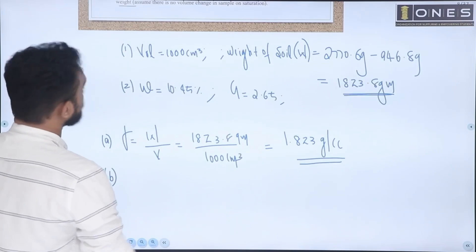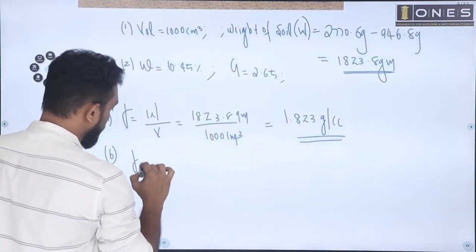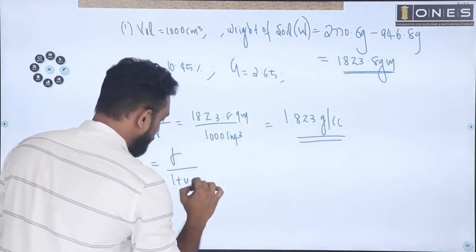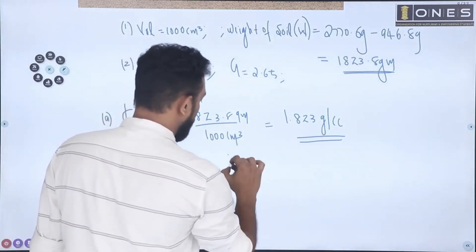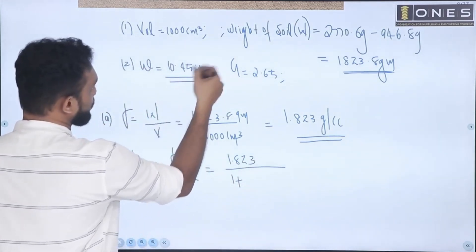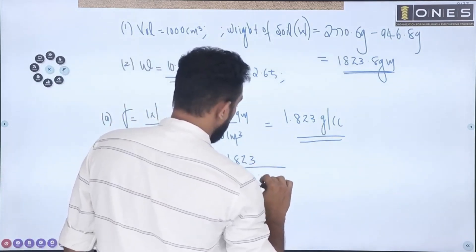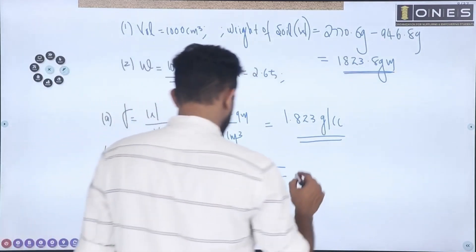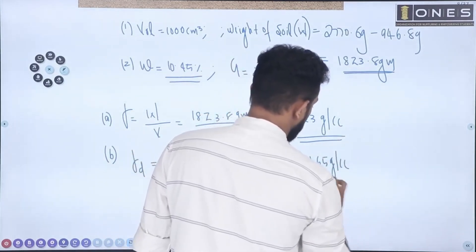Next, they are asking for dry unit weight. The direct equation is: gamma d equals gamma divided by 1 plus w. Substituting: 1.823 divided by (1 plus 0.1045).